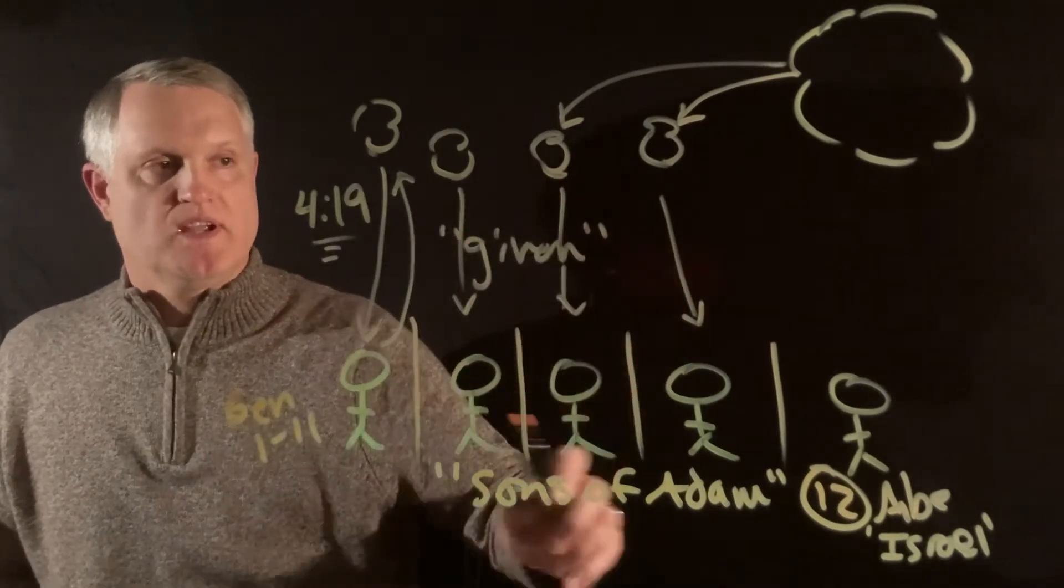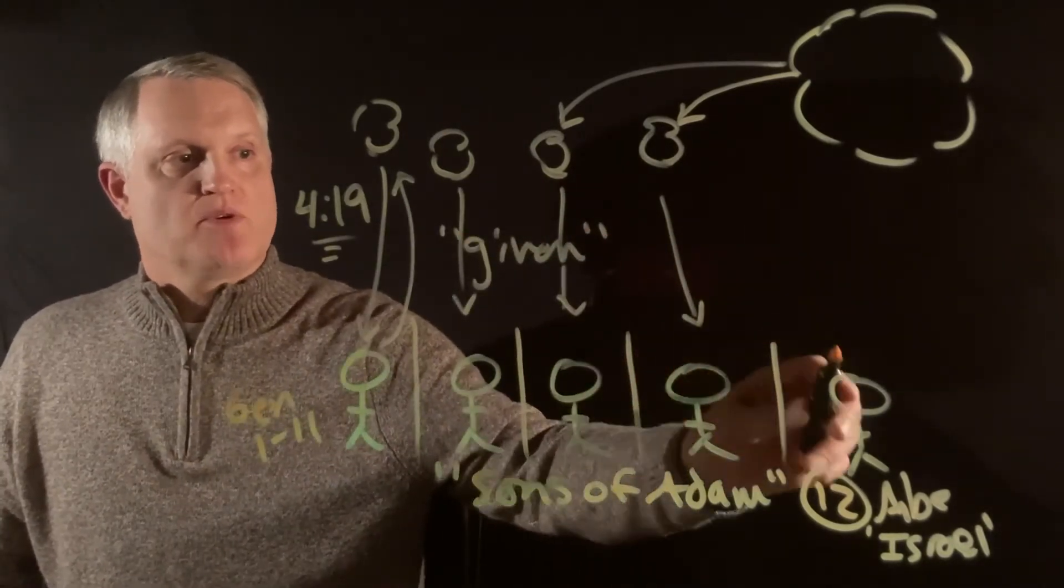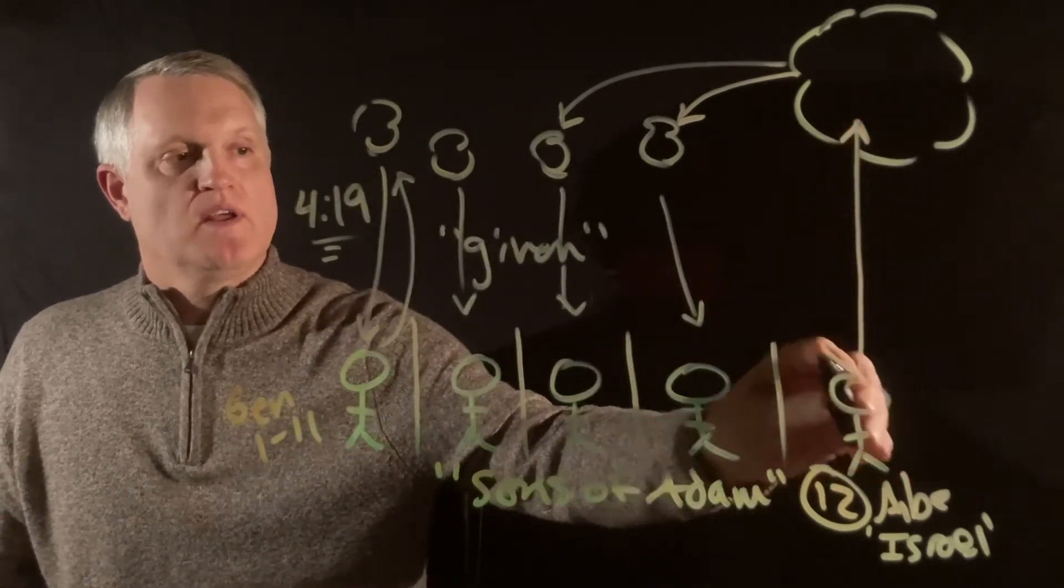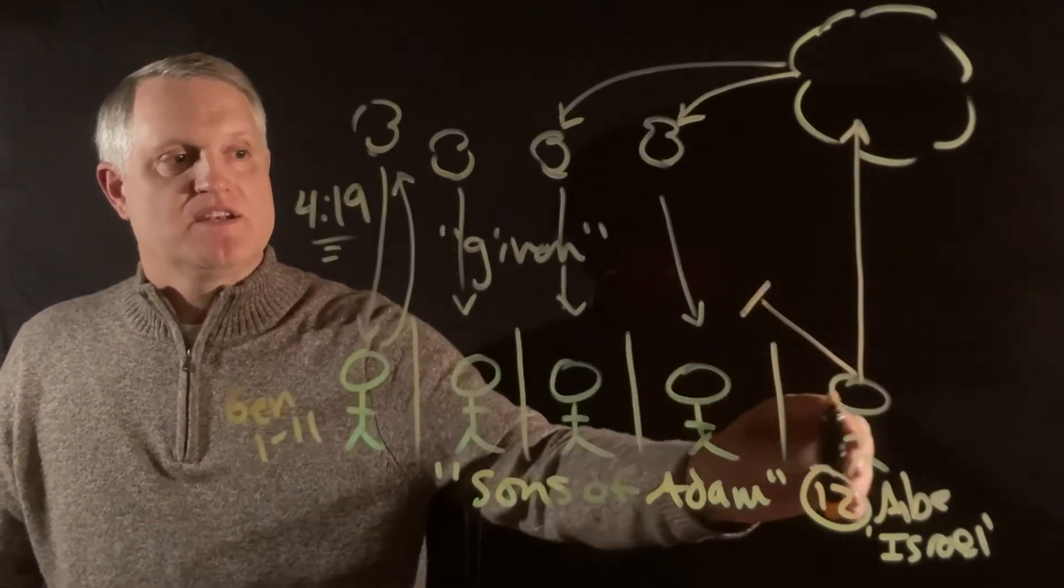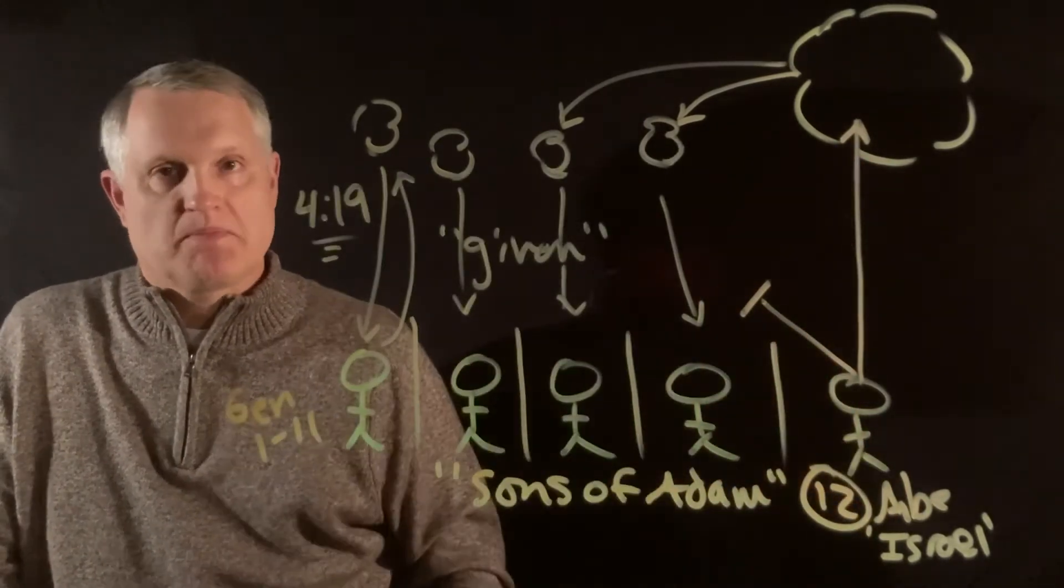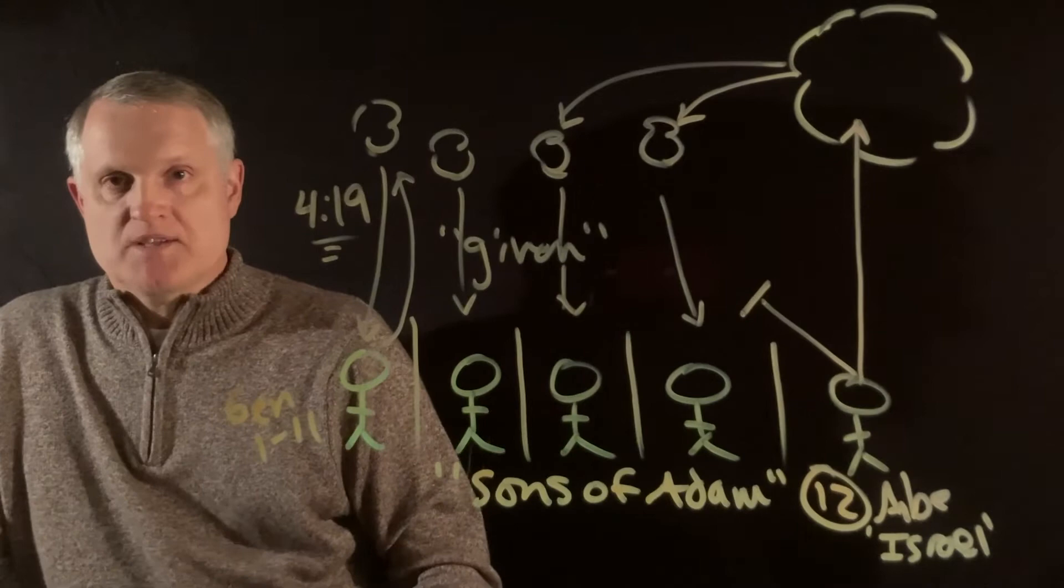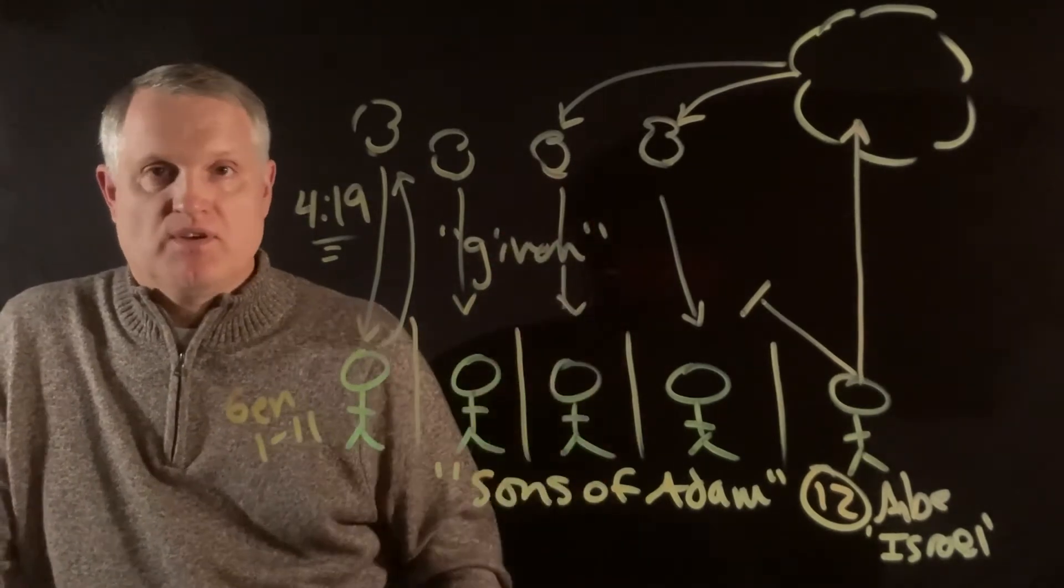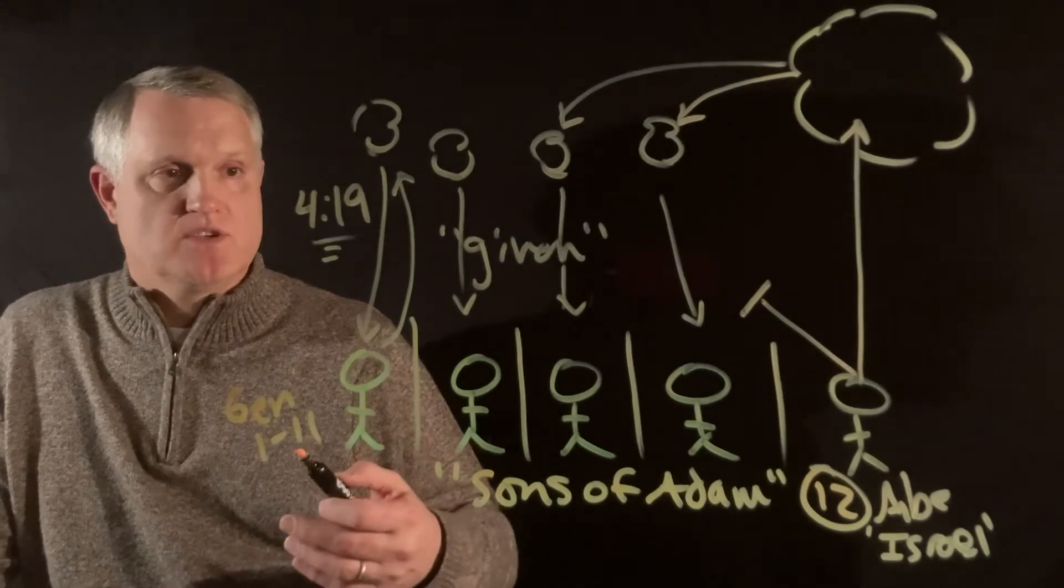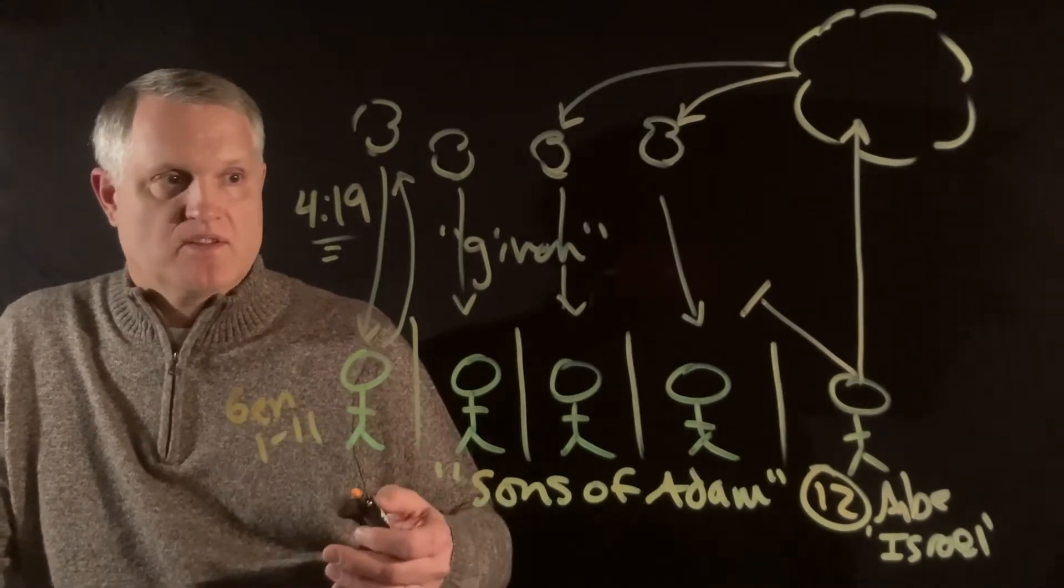Now, the reason that's important is because we have already seen this so many times that the role, both nationally and individually, for Abraham's family is to worship Yahweh and not worship other gods. Deuteronomy has been all about these other gods. They're mentioned 34 times by name, at least that title, gods, is used far more than any other book.